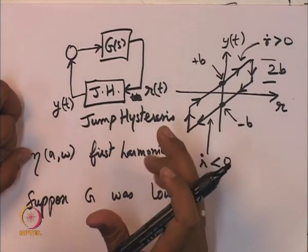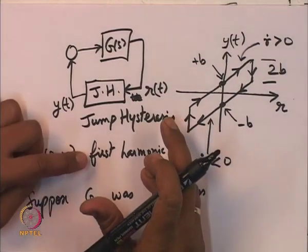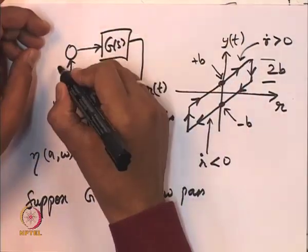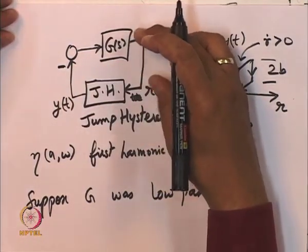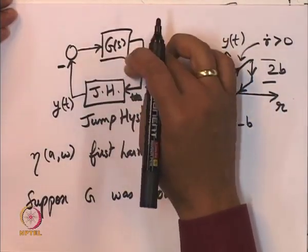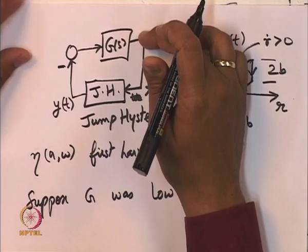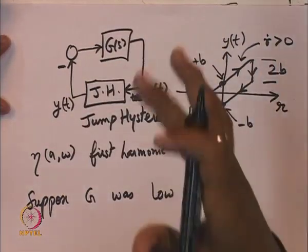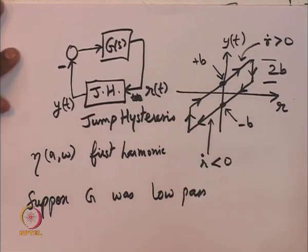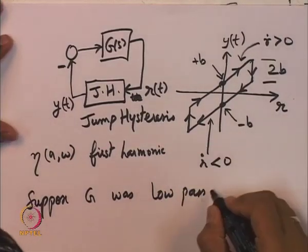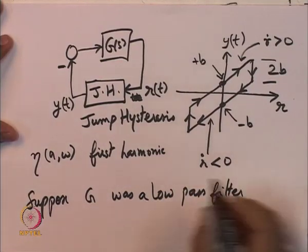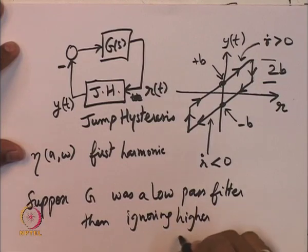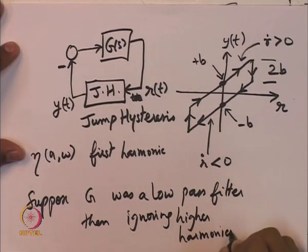Suppose G was a low pass filter. Then we can indeed say that the higher harmonics are going to be amplified less by G, and to what extent it is low pass decides the accuracy of the solution we get by using this calculation procedure. The information from the second harmonic and onwards that we have ignored is justified if G is a low pass filter. Please note: whenever we use the describing function method to calculate the frequency and amplitude of the periodic orbit, one should check that G is a low pass filter. If G is a high pass filter, then the calculations are expected to be very wrong.